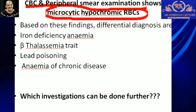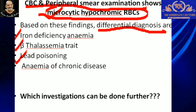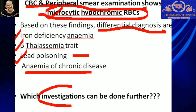lead poisoning leading to sideroblastic anemia, or anemia of chronic disease. These could be our differential diagnoses. So, what further investigations should we do to determine which one of these causes is responsible for the microcytic and hypochromic anemia? We will come back to evaluate this case later in our discussion, but first, let us start with how we will approach such patients.